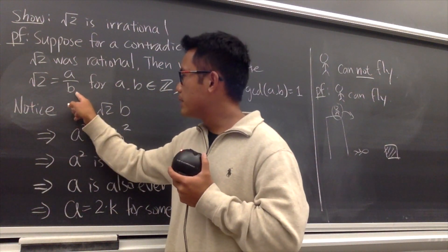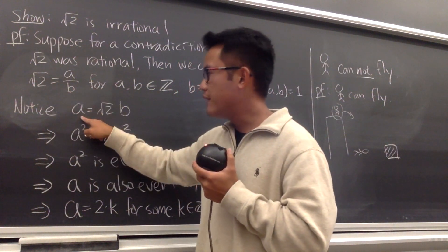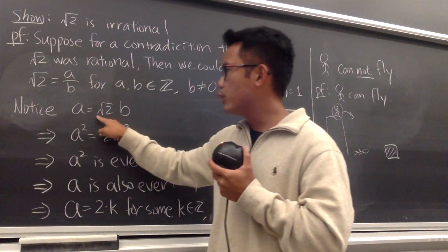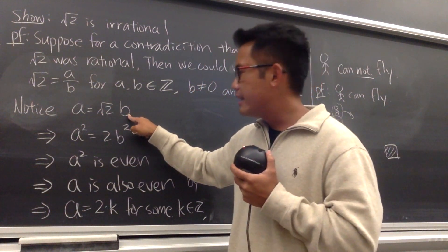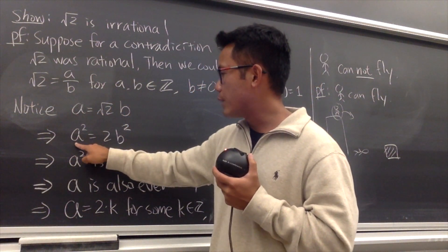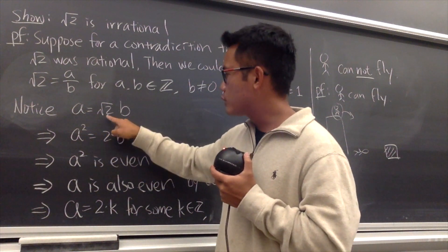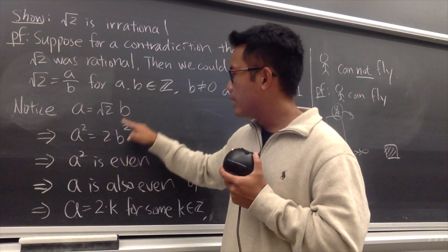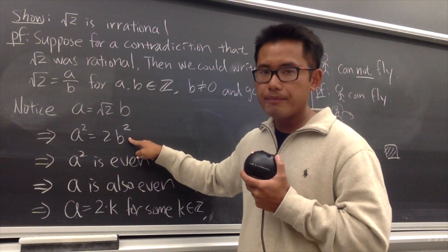From this, let's multiply b on both sides and put down a first, so we will have a equals square root of 2 times b. Then let's square both sides, so we get a squared. Square root of 2 squared is 2, b squared is b squared.